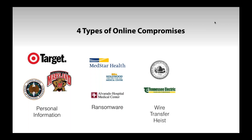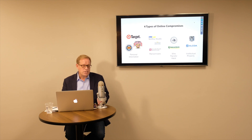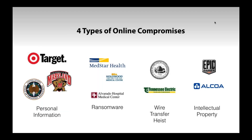Another type is wire transfer heist. This happens in a couple of ways — one is CEO fraud, and another involves installing software via a keylogger to get access to your bank information. Finally, there's intellectual property theft, which is mostly nation-states or companies going after another organization's business secrets rather than money.